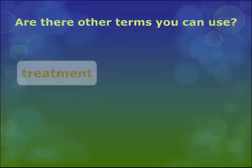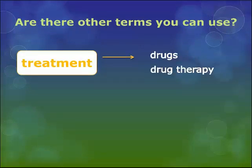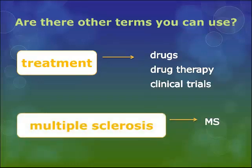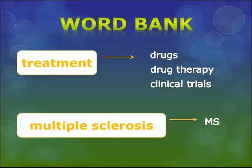Look at the word treatment. You may also want to try searching with drugs, drug therapy, or clinical trials. Multiple sclerosis is also referred to as MS. The terms you have identified will become a word bank that you can use to create search phrases.